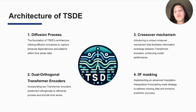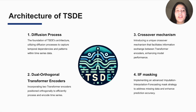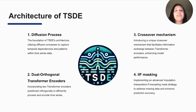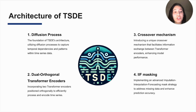Second, we have two transformer encoders which are positioned orthogonally and they learn temporal and spatial dependencies. Third, we have introduced a crossover mechanism, and this mechanism enables the exchange of the transformer encoders' outputs without adding extra parameters.